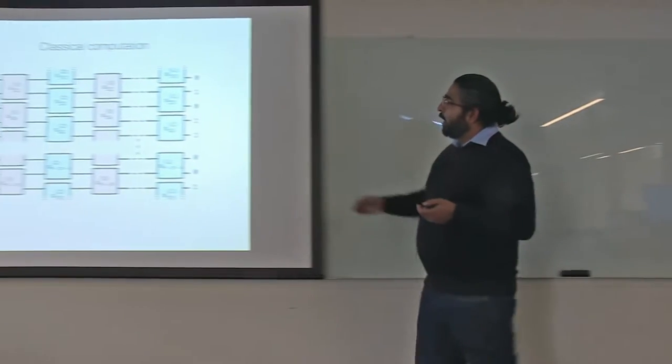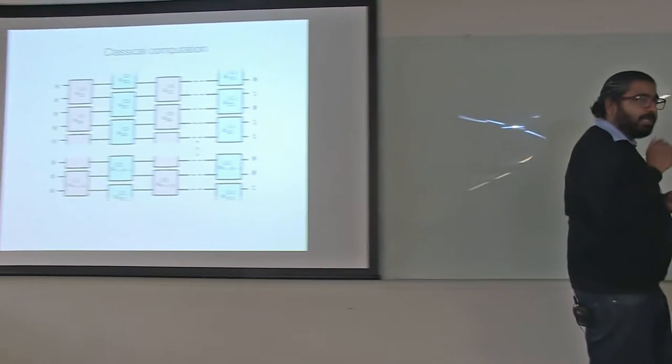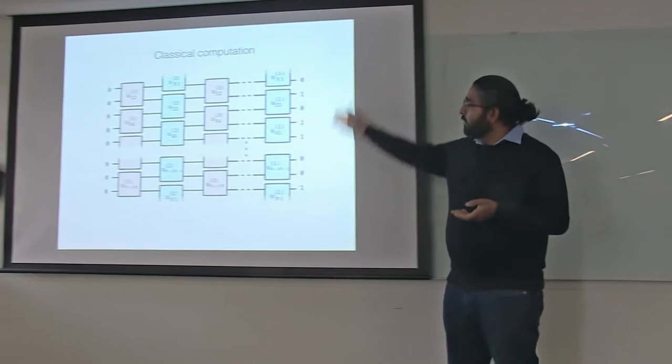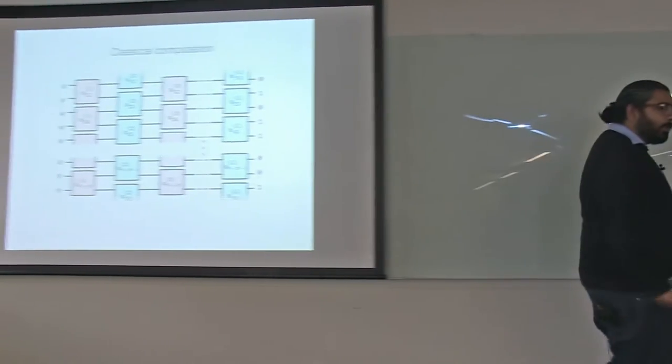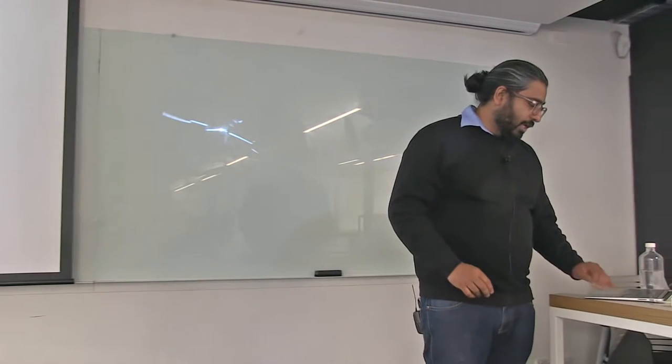And at the end of the computation, we get another string of bits which have some information or the solution, potential solution to the problem. And it's just encoded in zeros and ones. And that's a very simple model for classical computation.